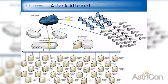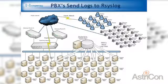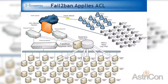Running through it visually: the network is up and running, a hacker decides to attack a PBX, the logs are shipped off to the central repository server, which in turn throws up the access list at the gate, and the hacker is stopped — he must go someplace else.